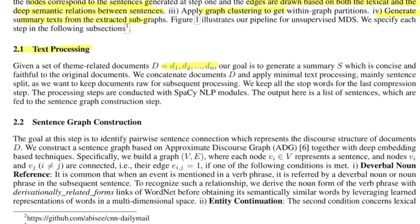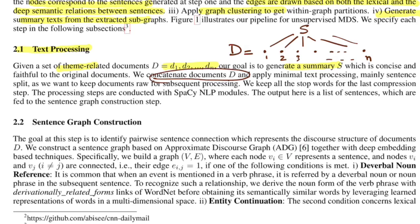For text processing, let's say you have n documents of some common theme and you want a summary S generated across all n documents. The first step is to concatenate all d documents into one large text comprising sentences from all n documents. Then you do a sentence split, tokenizing at every sentence, because the graph we want to create must be at sentence level where each node is a sentence. Stop words are not removed. All processing is done using spaCy. At this step we get the list of all sentences, which we take forward to construct the graph.